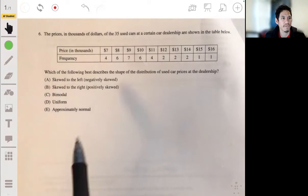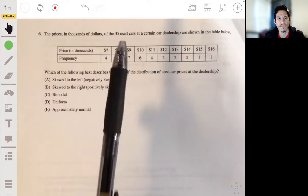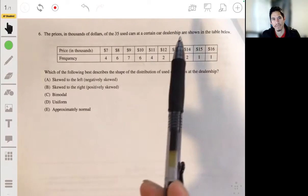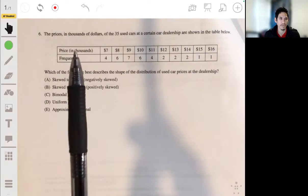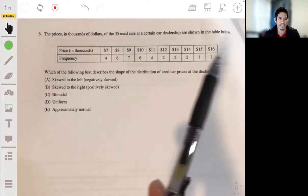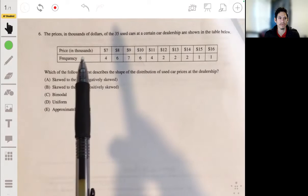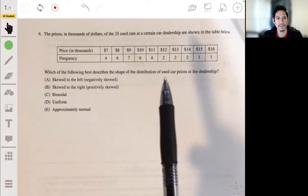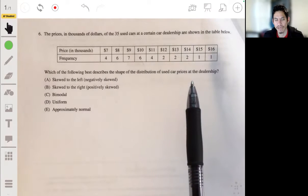Alright, problem six. We have the prices in dollars, in thousands of dollars, of the 35 used cars at a certain car dealership shown in the table below. We have the price in the first row and the frequency in the second row. Which of the following best describes the shape of the distribution of used car prices at the dealership?